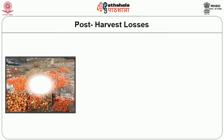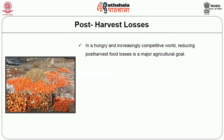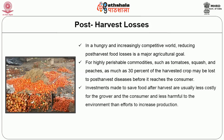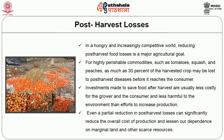In a hungry and increasingly competitive world, reducing post-harvest food losses is a major agricultural goal. For highly perishable commodities such as tomatoes, squash and peaches, as much as 30% of the harvested crop may be lost due to post-harvest diseases before it reaches the consumer. Investments made to save food after harvest are usually less costly for the grower and consumer and less harmful to the environment than efforts to increase production. Even a partial reduction in post-harvest losses can significantly reduce the overall cost of production and lessen dependence on marginal land and other scarce resources.